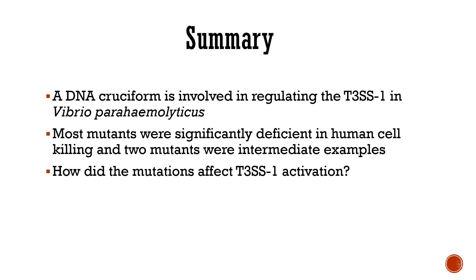In summary, I was able to investigate if the DNA cruciform helps regulate the genetic expression of the type 3 secretion system in Vibrio parahaemolyticus. This was done by infecting human cells with Vibrio mutants. We found that the mutation significantly impacted the Vibrio's efficiency of cell killing. However, we still need to determine how the mutations affected the activation or inactivation of the type 3 secretion system I.